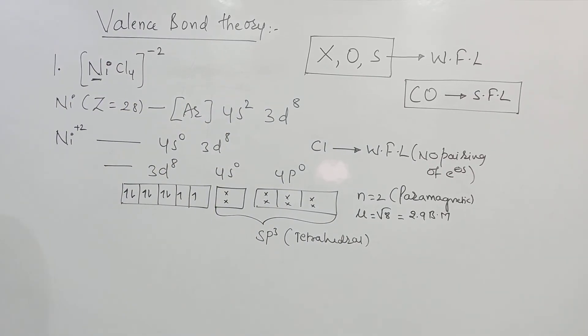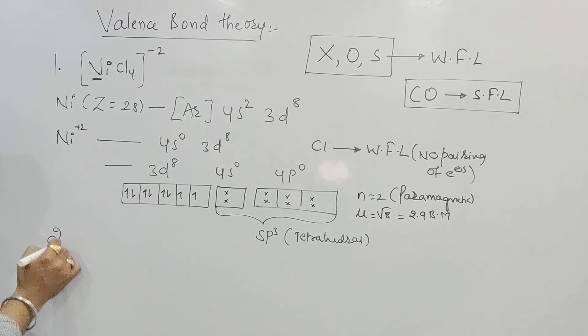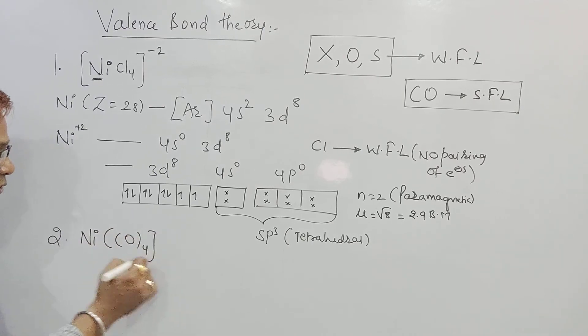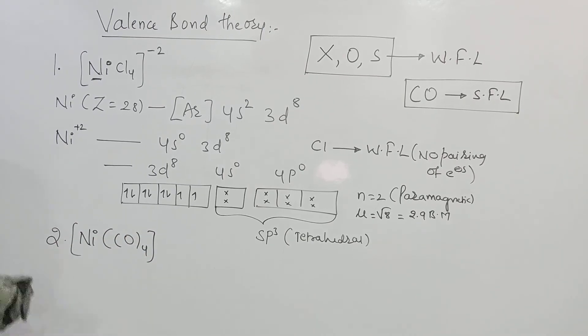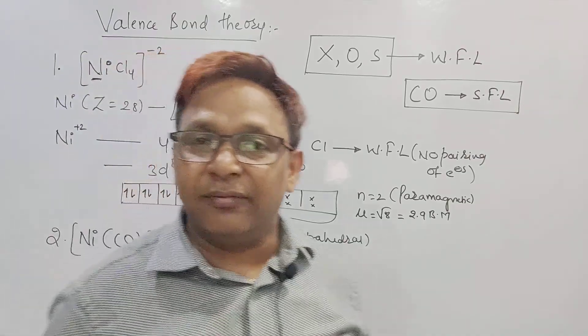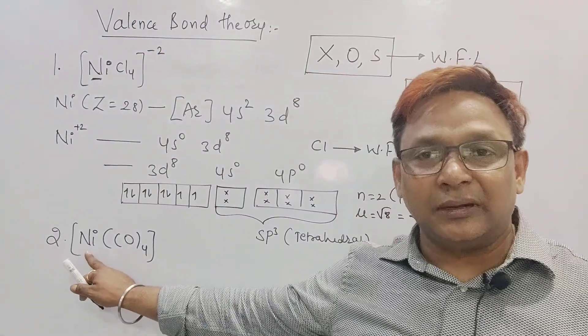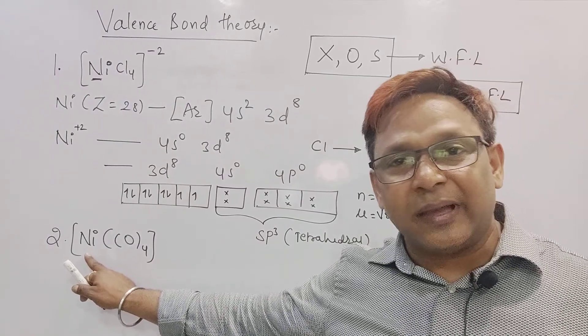Is it clear? Chlorine. One more example I will discuss with you. Just take a screenshot of this one. One more very good example. Second one is Ni carbon monoxide CO taken 4 times with no charge present outside it. Try this complex compound. Get the hybridization of central metal atom. Find out its magnetic moment.